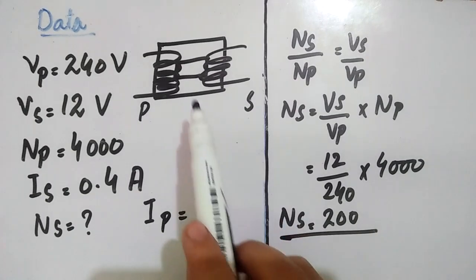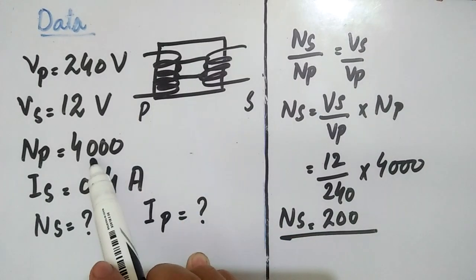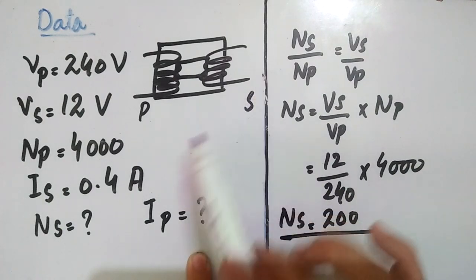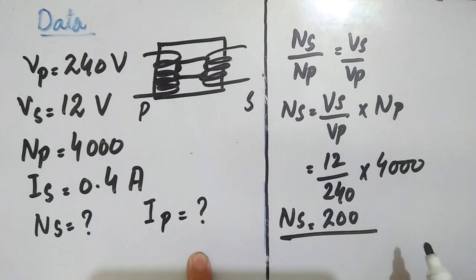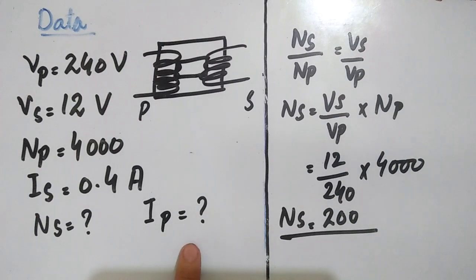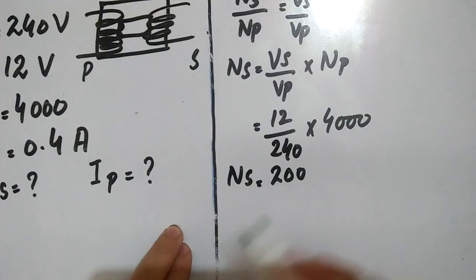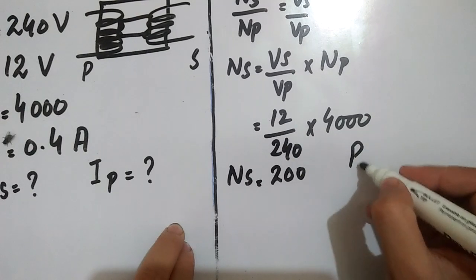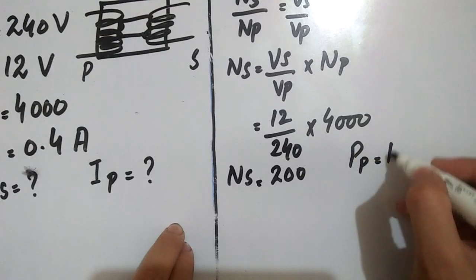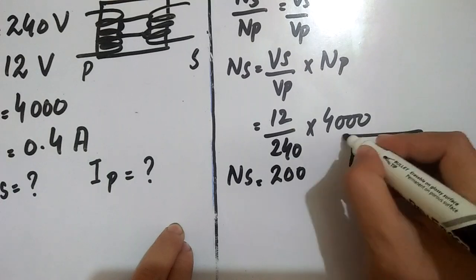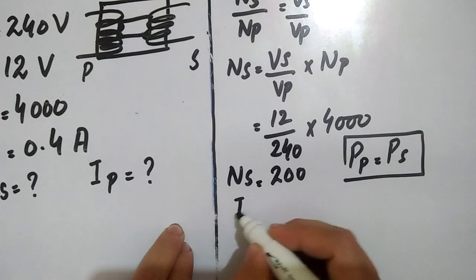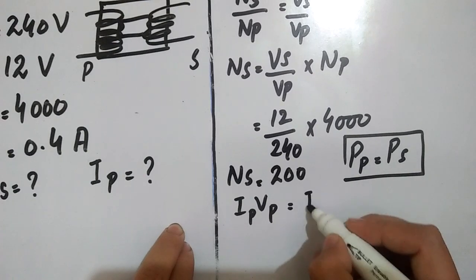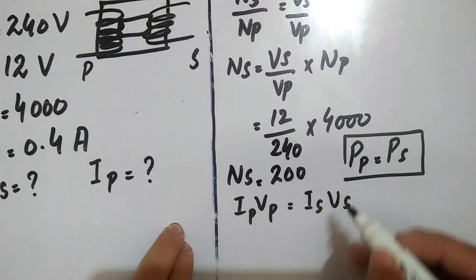Now you can see that for a step-down transformer, the primary number of turns is greater than the secondary number of turns, since the voltage decreases. Now to find the primary current Ip, we use the fact that the power of the primary equals the power of the secondary: Power = Ip × Vp = Is × Vs.